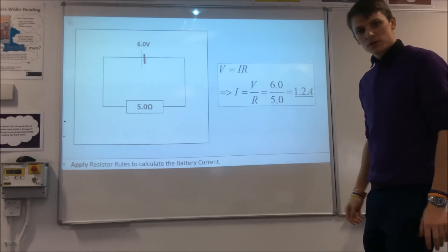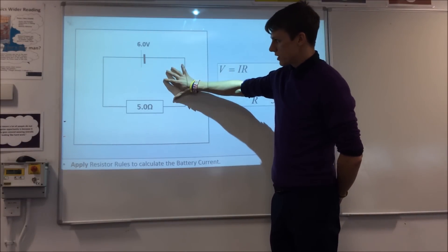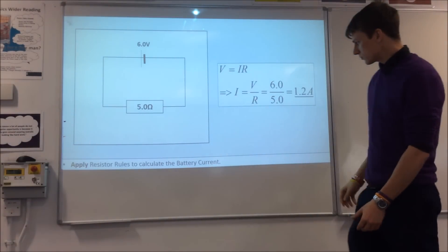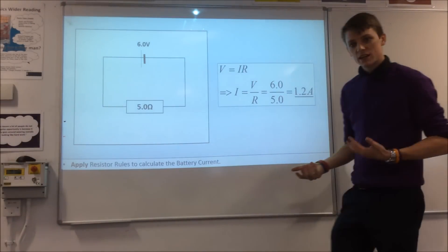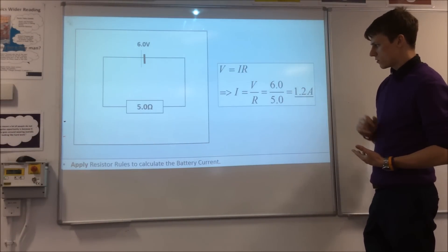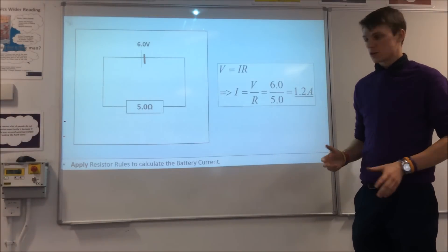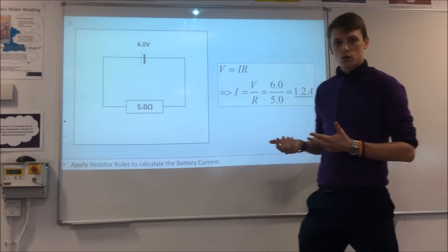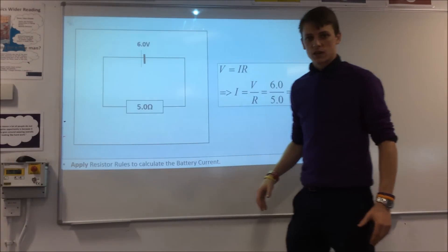What that gives us is a simple equivalent circuit diagram. Then if we want to calculate the current from the battery, we know the EMF and the resistance, so we can easily calculate the current — nice and straightforward. These rules are a very effective way of working out the potential difference or current from your power source.